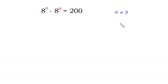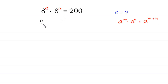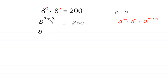According to this property of exponents, a to the power m times a to the power n is equal to a to the power m plus n. We can write 8 to the power a times 8 to the power a as 8 to the power a plus a, which is 8 to the power 2a, equal to 200.